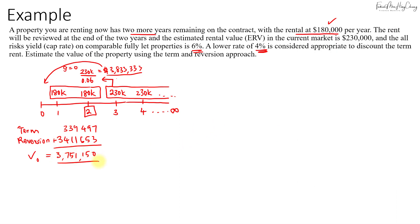So that's the value of the property today based on the term and reversion approach. Take note that when you PV the term rent, we have to use the lower cap rate of 4%. And when we PV the reversion amount, we'll be using the cap rate of 6%.